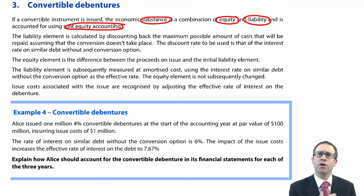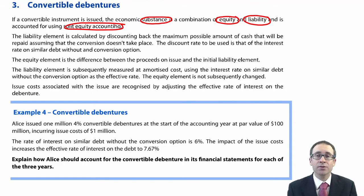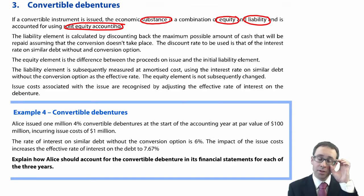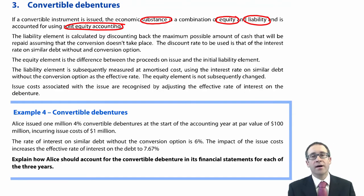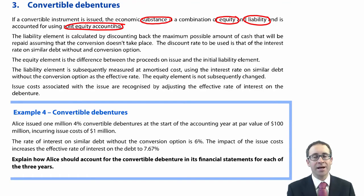Once you've got the liability element, you then just treat that as amortised cost. And then once you've got the equity element, you just leave that until conversion happens at some point in the future. The issue is how do we work out the value of the liability and the value of the equity? That's the challenge, and that involved discounting — that's why it was a challenge at F7 and why it's still a challenge now at P2.